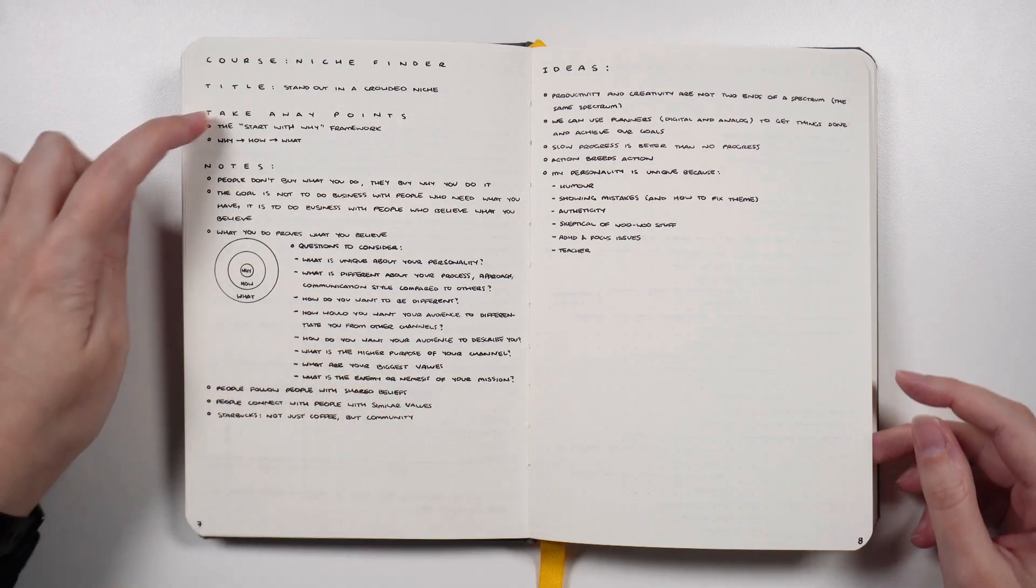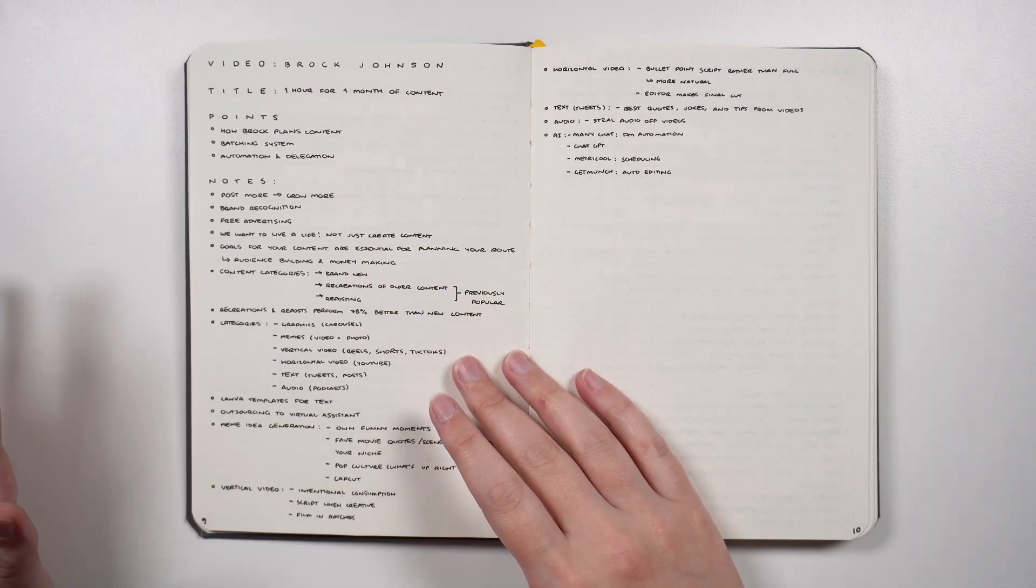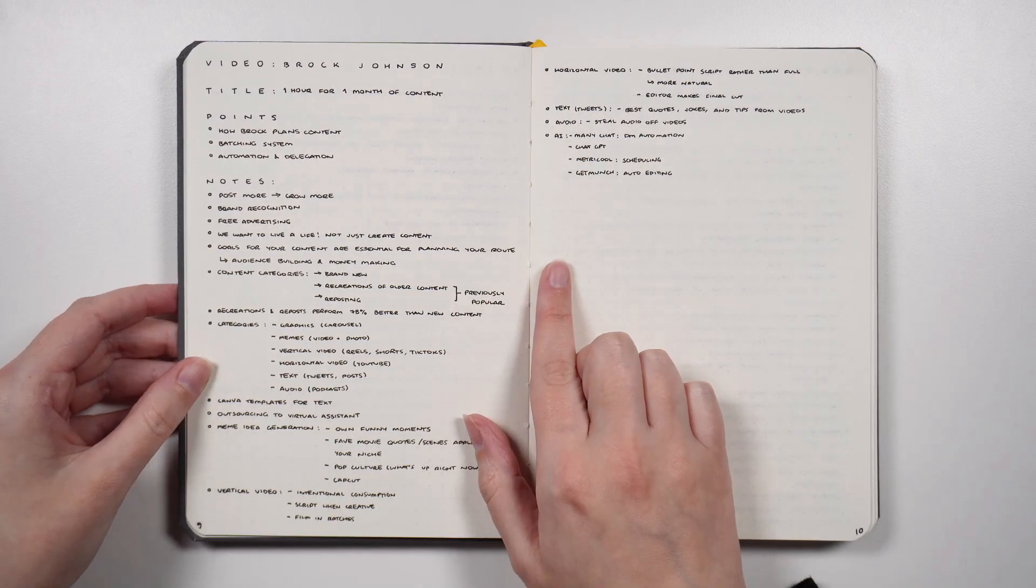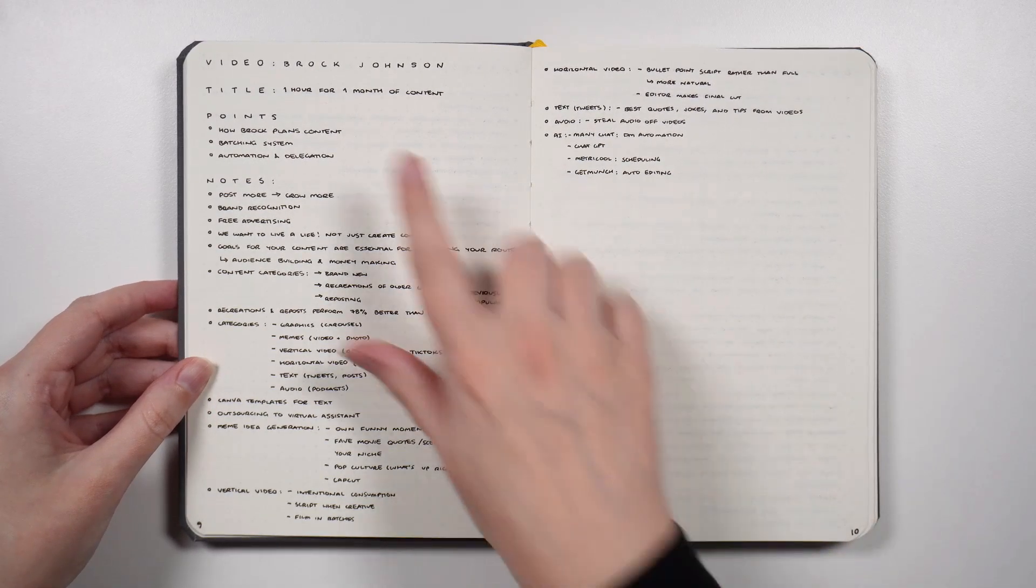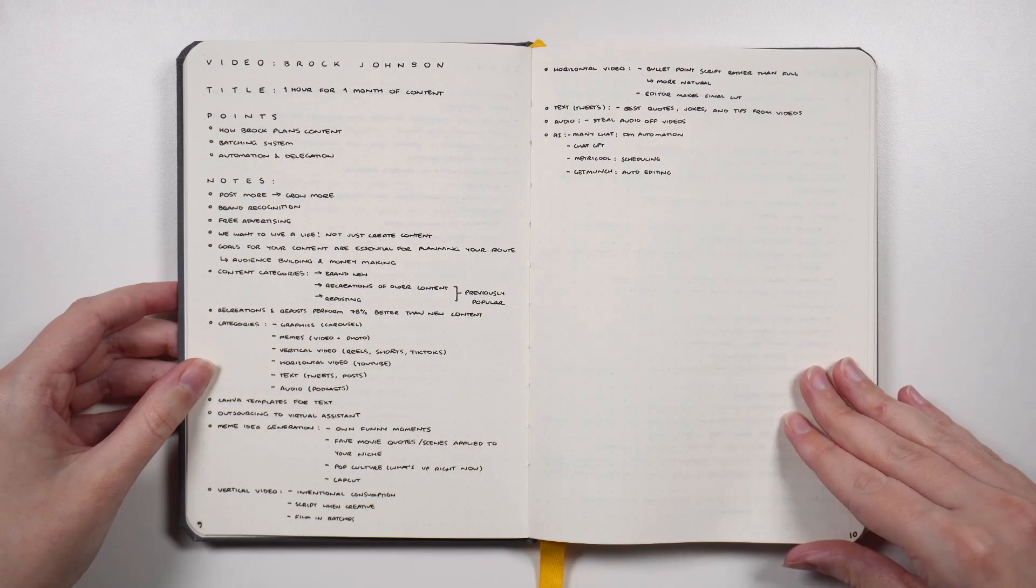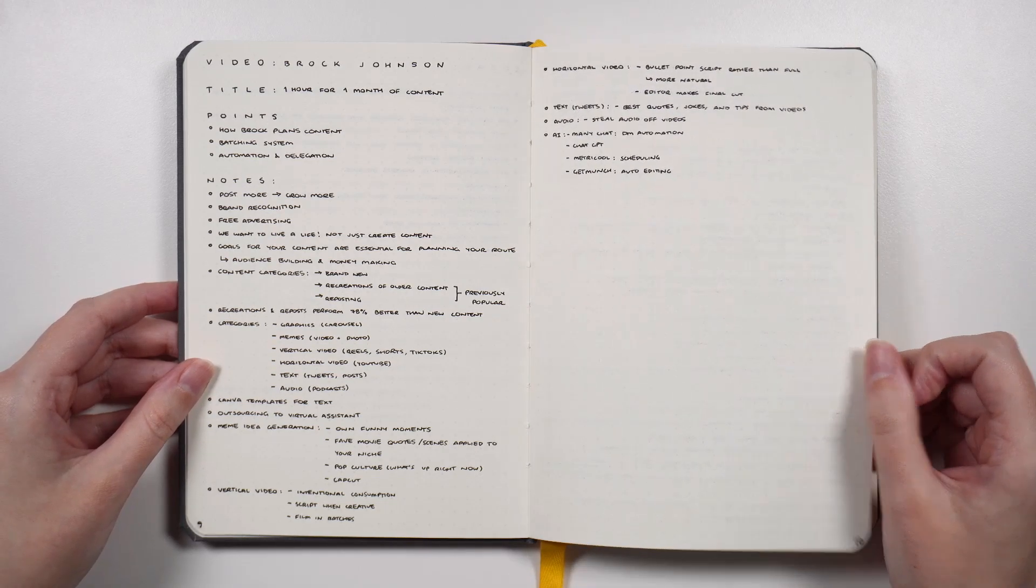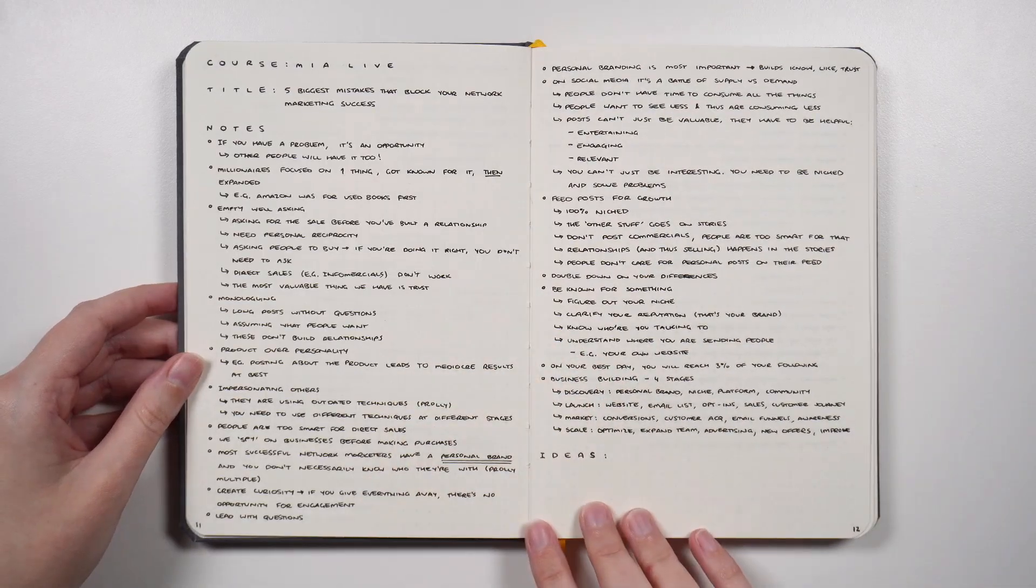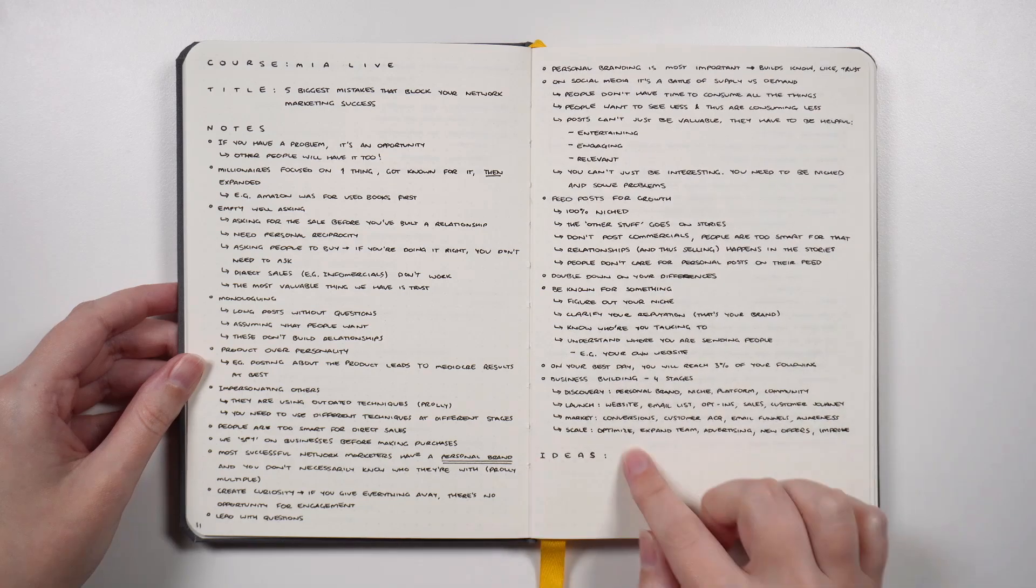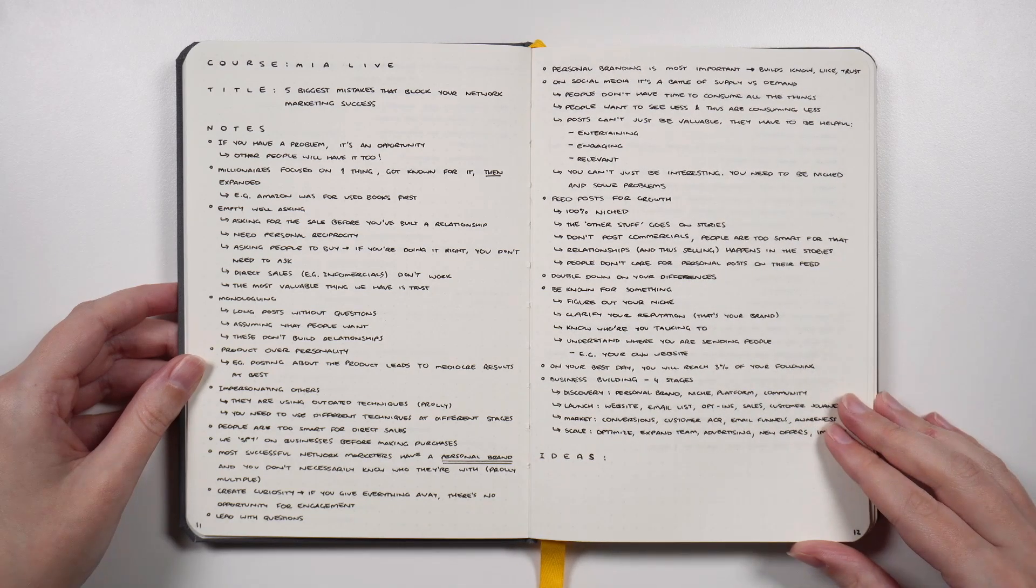The nice part about this course in particular is because the takeaway points were kind of given to us before you started watching. Similar idea to this one which I think was a live video, but this one was from Brock Johnson. It was about making content but faster because that is something that I could certainly use some assistance with. This one was another live stream which I obviously had a lot of notes to write down and I gave myself an idea space but I didn't actually end up using it.